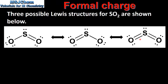Next we'll determine the formal charge on each atom. Starting with the Lewis structure on the left, this oxygen atom has six valence electrons, minus six non-bonding electrons, minus half the number of bonding electrons, which is one, giving a formal charge of negative one. For the sulfur atom we have six valence electrons, minus two non-bonding electrons, minus half of six bonding electrons, which gives a formal charge of plus one. And for the oxygen atom on the right we have six minus four minus half of four which is two, giving a formal charge of zero.